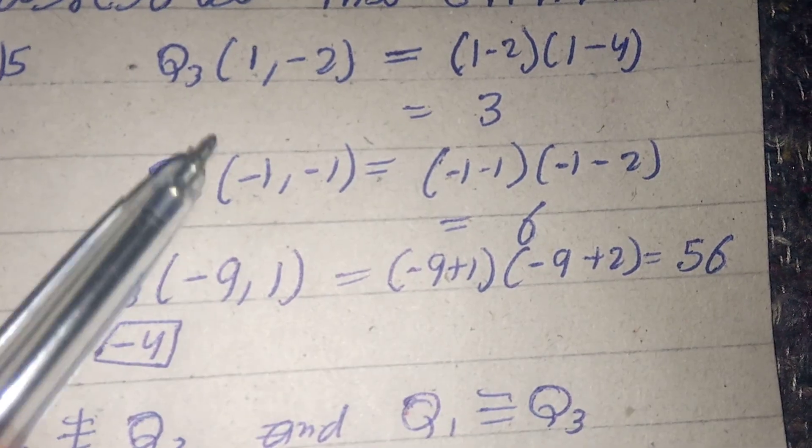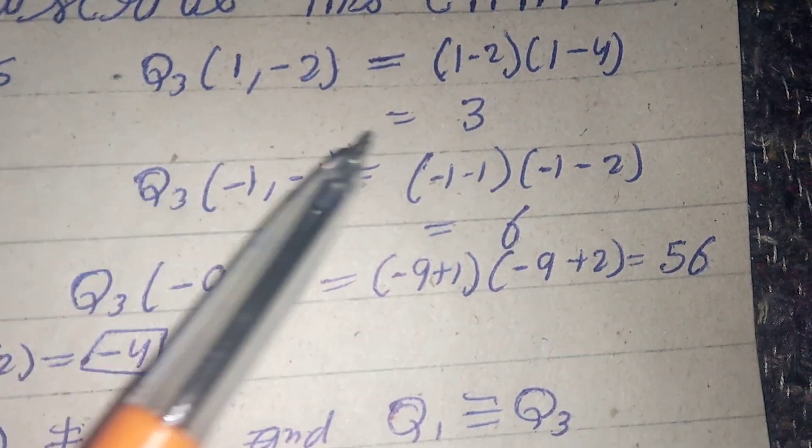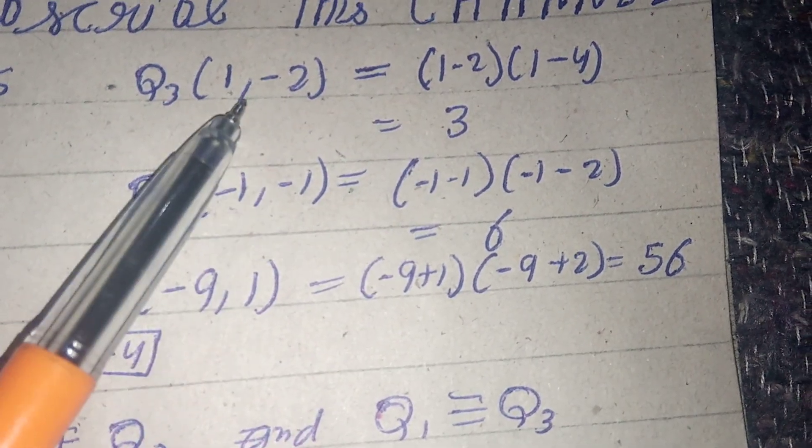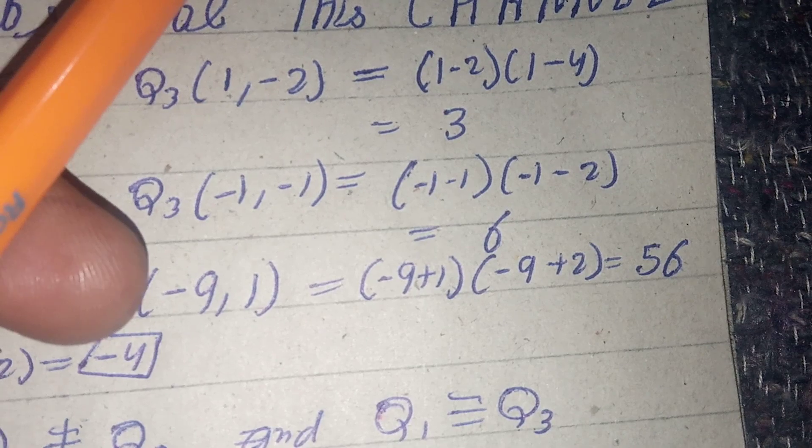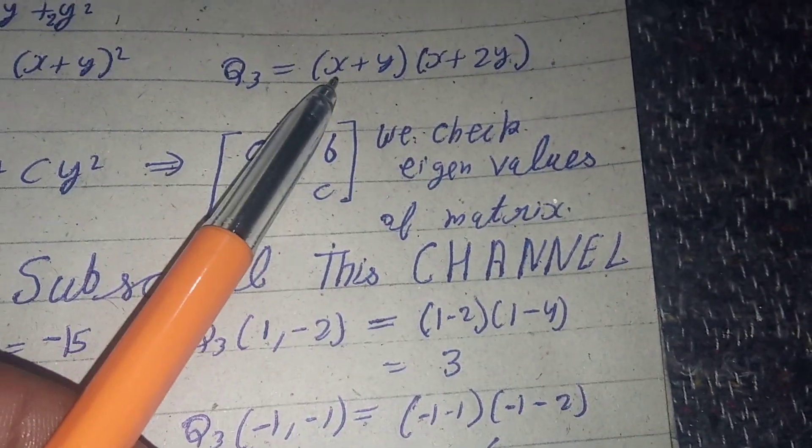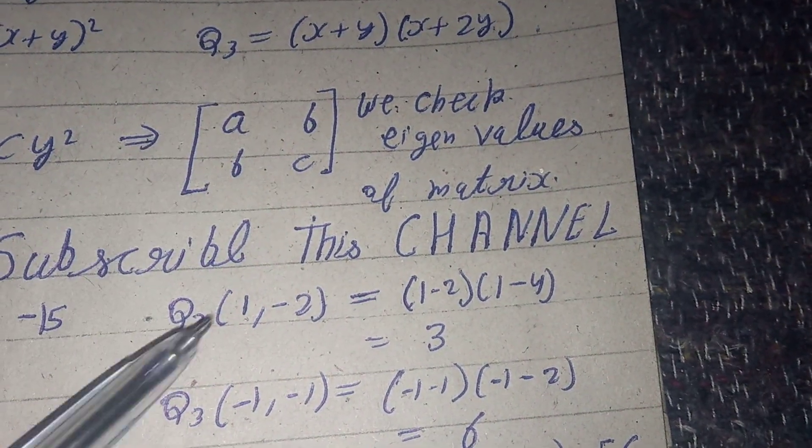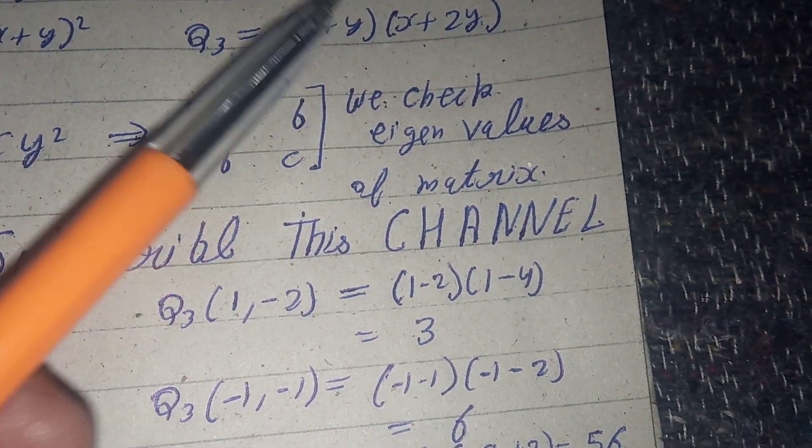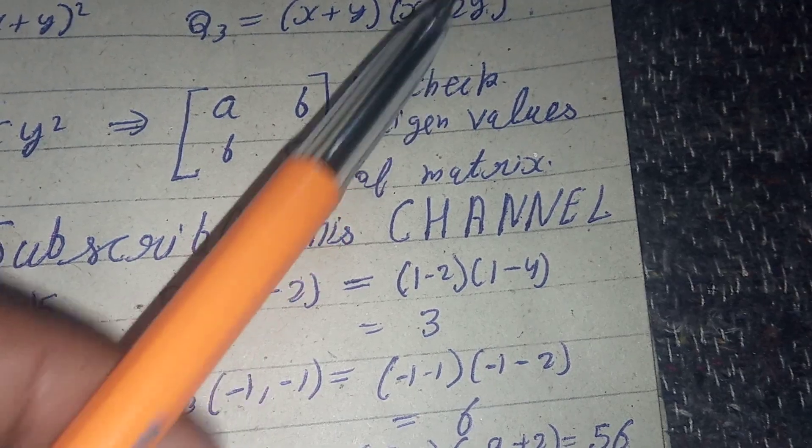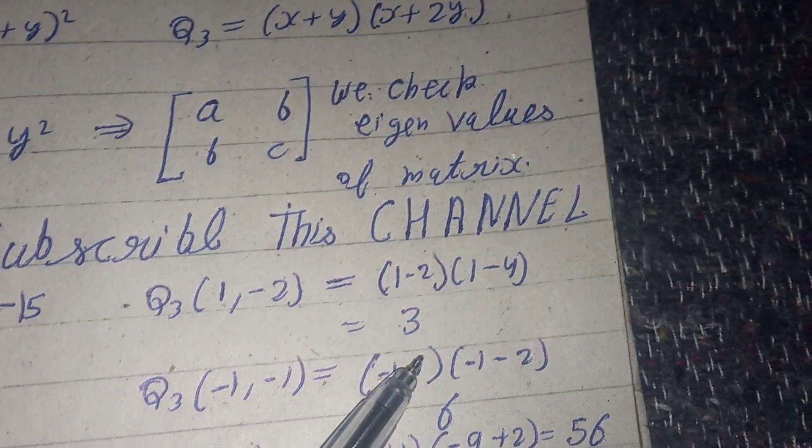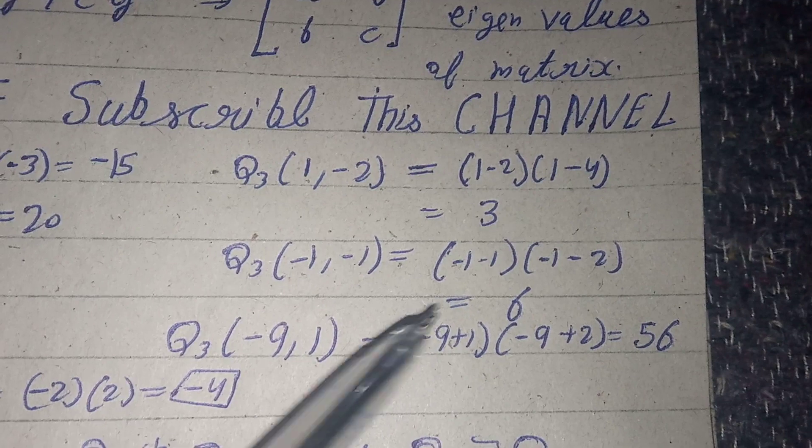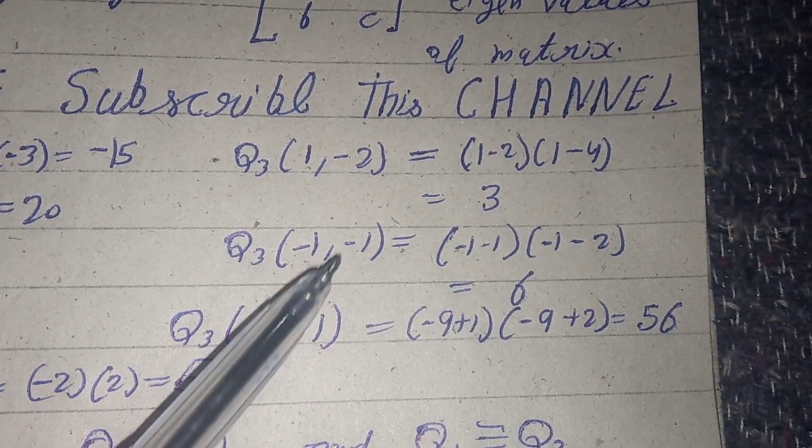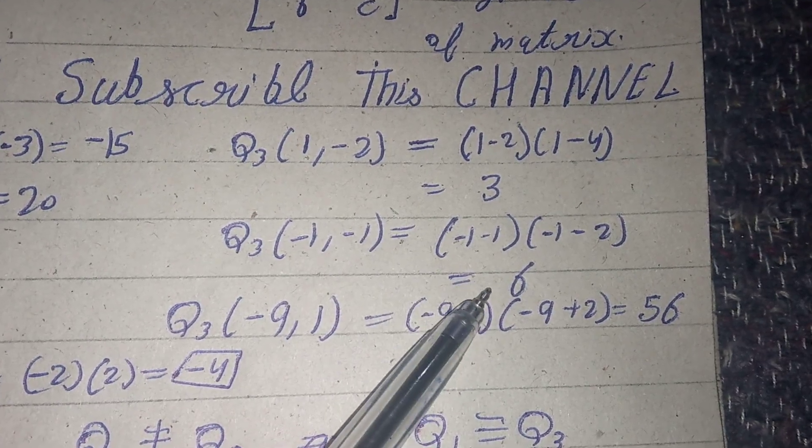Here q3 takes positive values. At x=1 and y=-2, we get (1-2)(1-4) = 3. Similarly, at x=-1 and y=-1, we get 6.